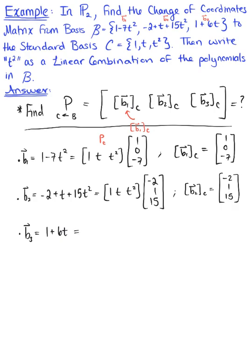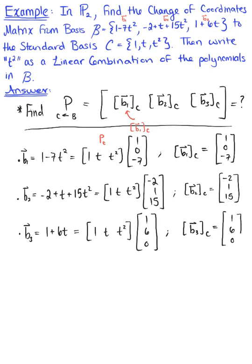Last but not least, we have vector b sub 3 defined by the polynomial 1 plus 6t. The matrix with column vectors 1, t, t squared multiplied by the column vector of coefficients 1, 6, 0 gives us that the coordinates of vector b sub 3 relative to the standard basis C is [1, 6, 0].